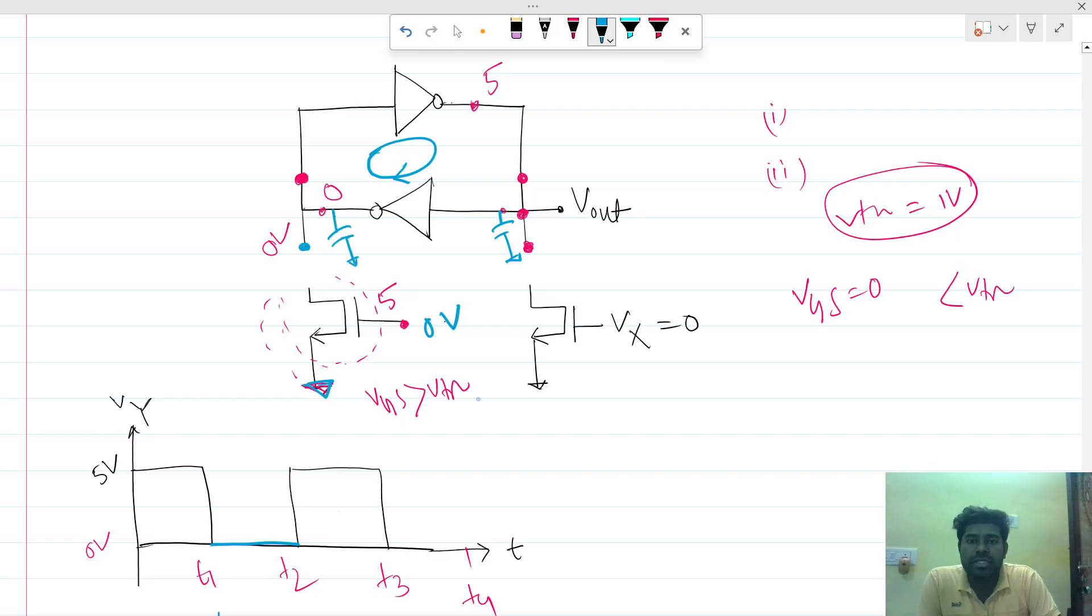It will hold the previous voltage. It is 5 volts, this was zero volt, and this was 5 volts. It will hold this previous voltage like that.